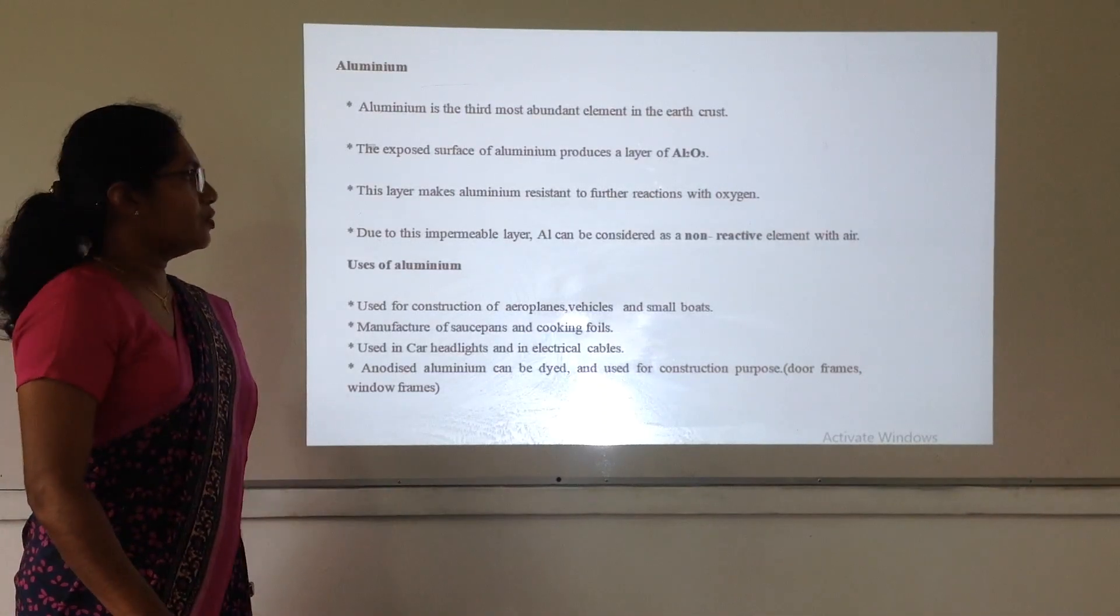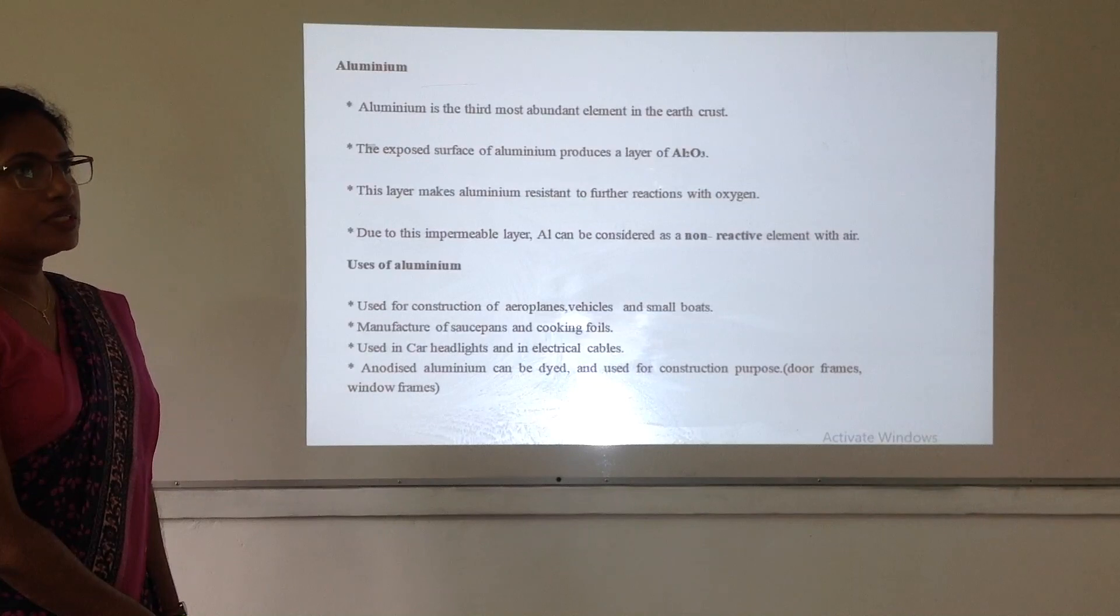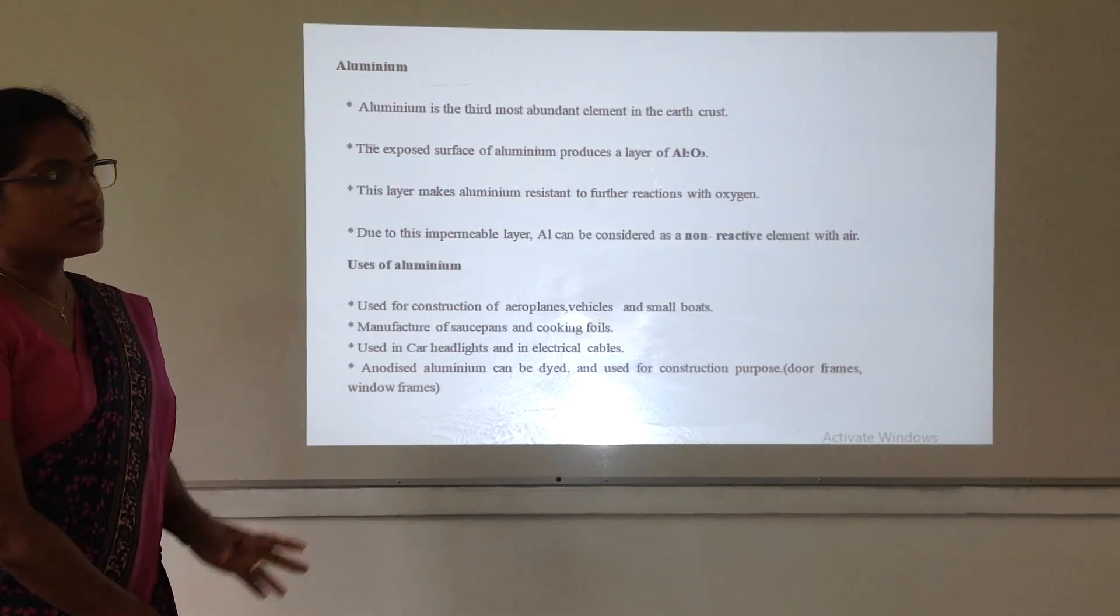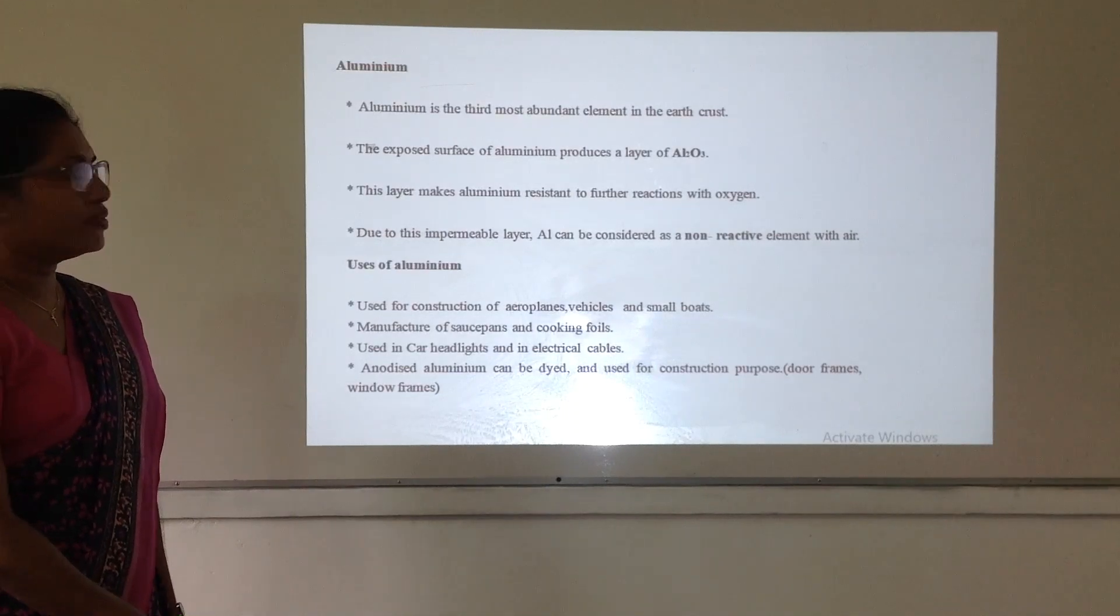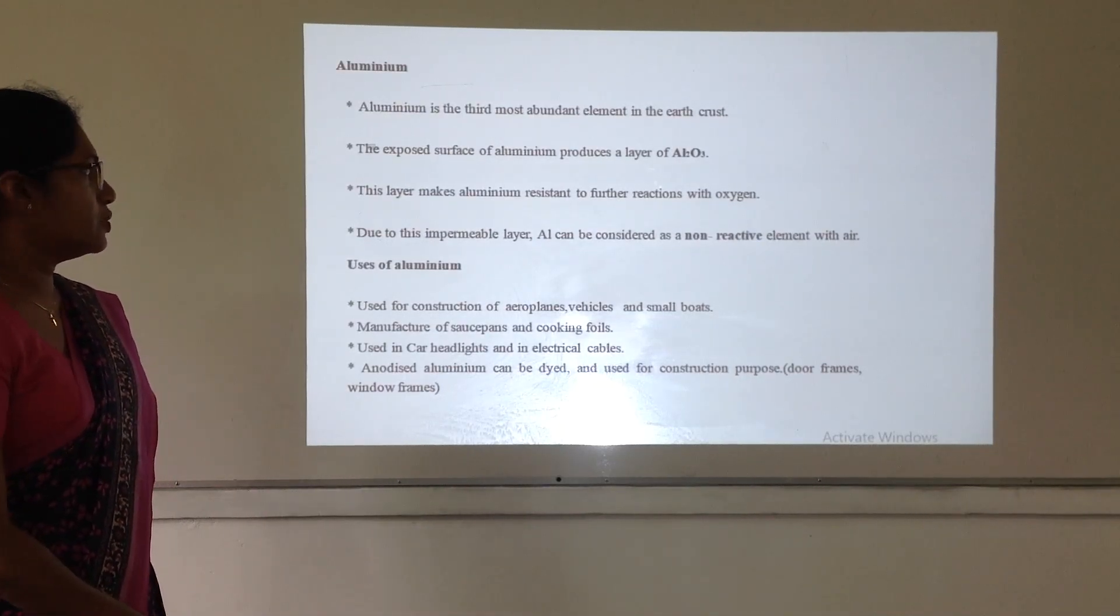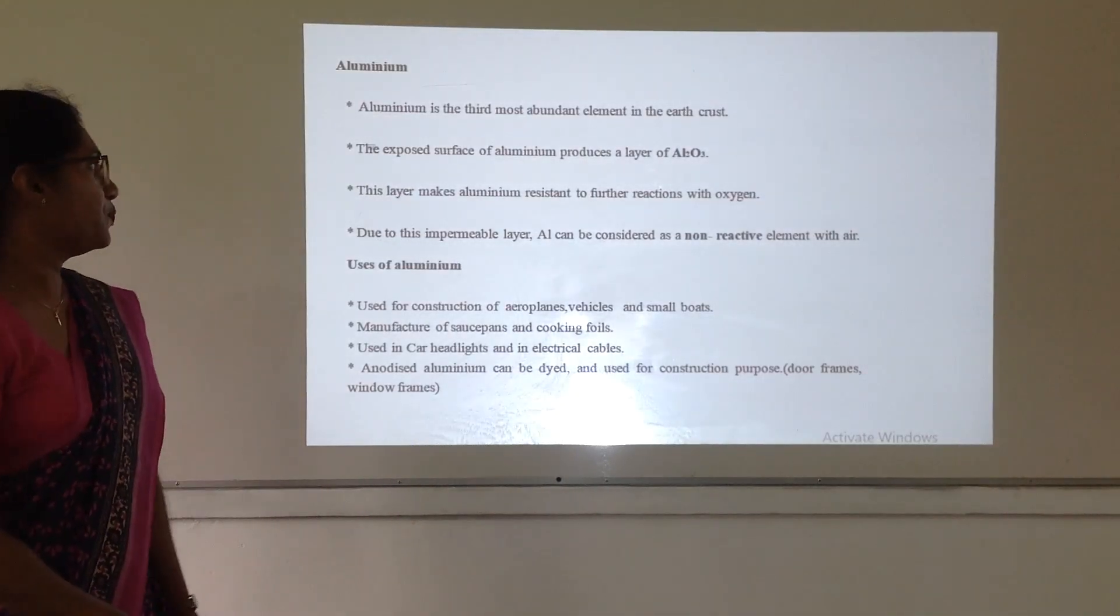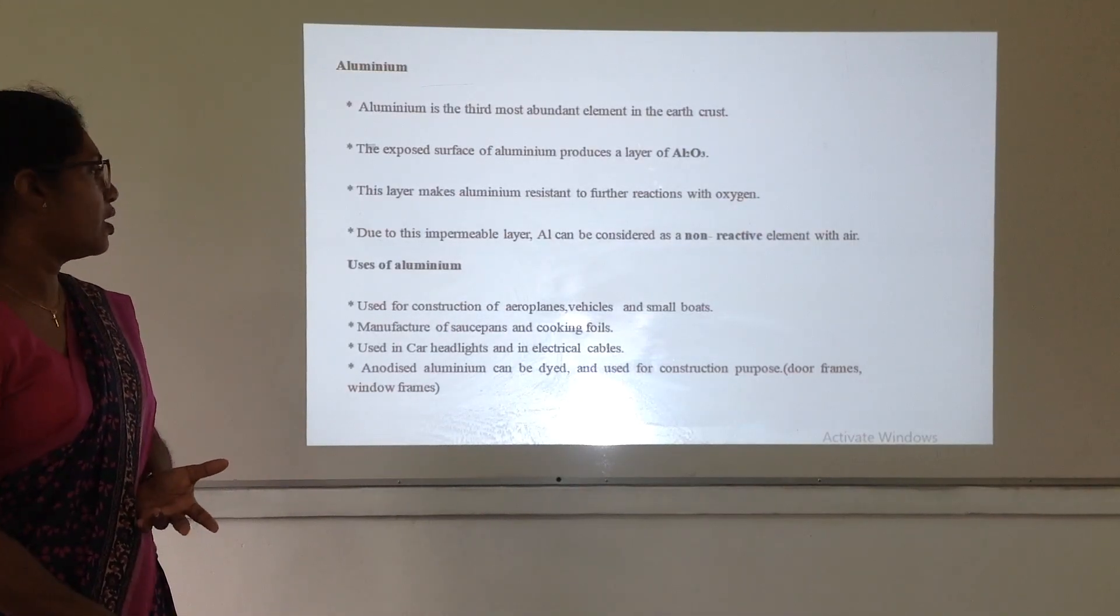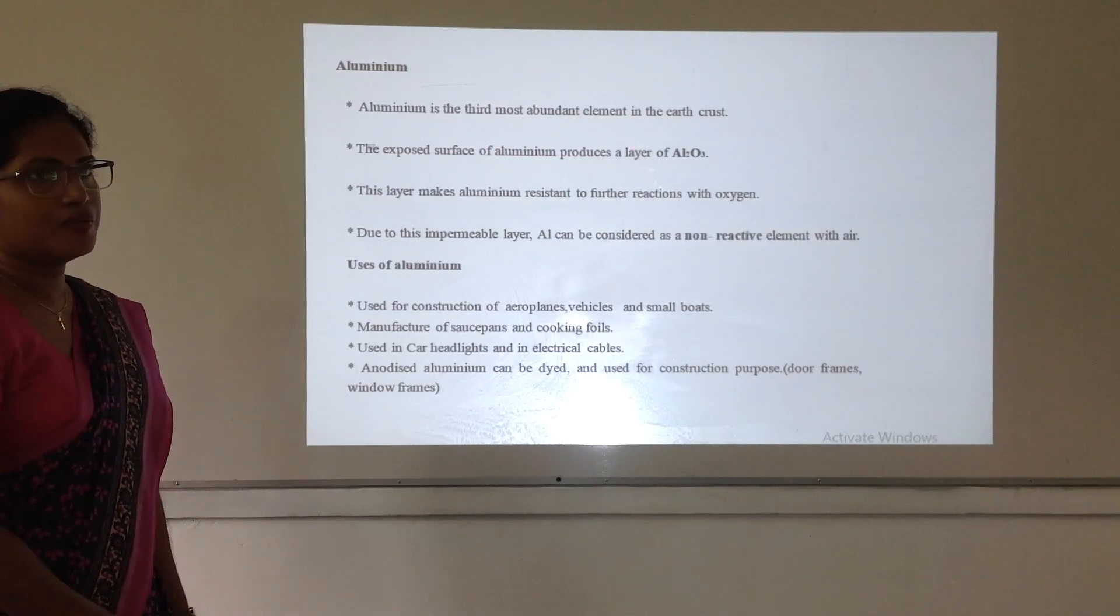Then, we have to talk about the aluminium. Because aluminium is an important element. Aluminium is the most abundant metal in the earth crust. And also, third most abundant element in the earth crust. When we expose aluminium to air, it produces aluminium oxide. And this aluminium oxide layer makes resistant layer to further reaction with air.